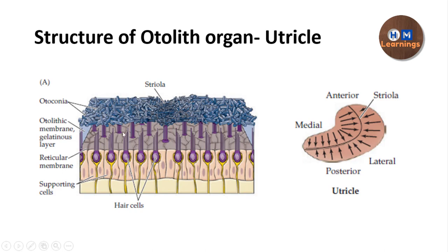From the apical part, the hair bundles project into a membrane called the otolithic membrane. This otolithic membrane has a gelatinous layer into which the hair bundles project, and above this layer there are crystals — calcium carbonate crystals called otoconia — embedded in the layer. Because of these otoconia, the mass of the otolithic membrane becomes greater than that of the surrounding structures and the surrounding endolymph.